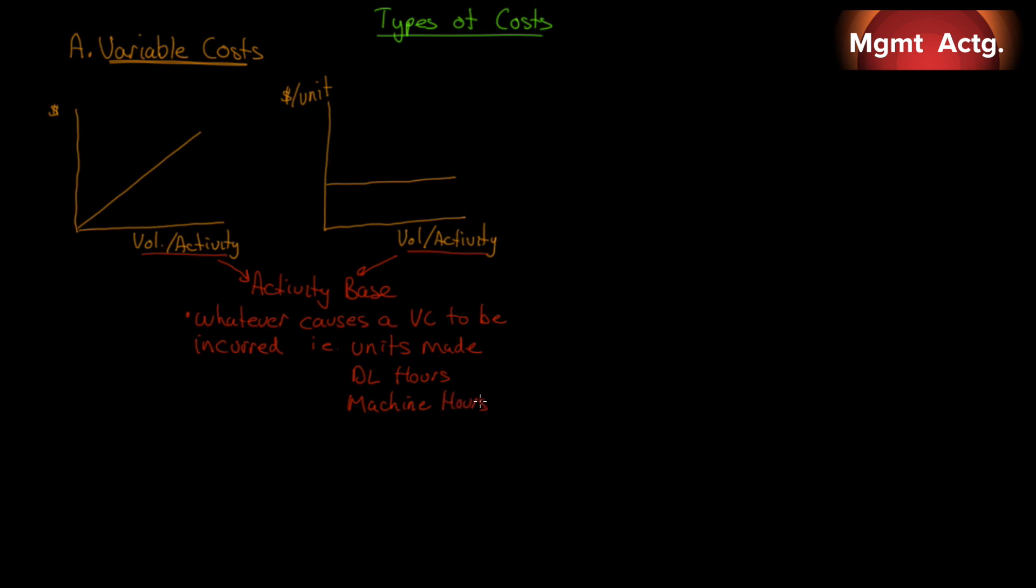Don't forget, direct labor hours and machine hours, we're going to see this again when we figure out how we divide our manufacturing overhead between different jobs. Now this chart that I drew up here is called a true variable cost. It varies in direct proportion to the activity base. So every extra unit incurs an extra cost. The next unit incurs another cost, and so on. That's the very definition of a variable cost.